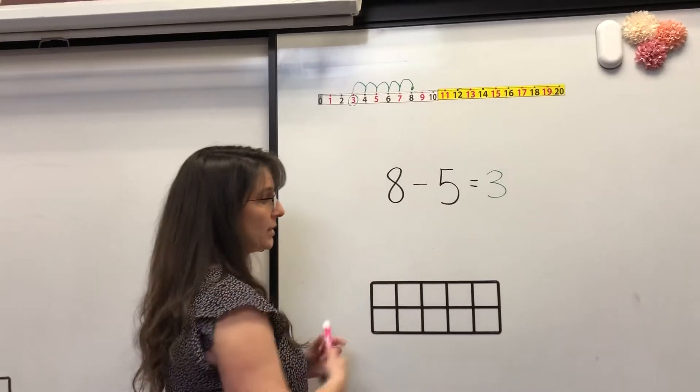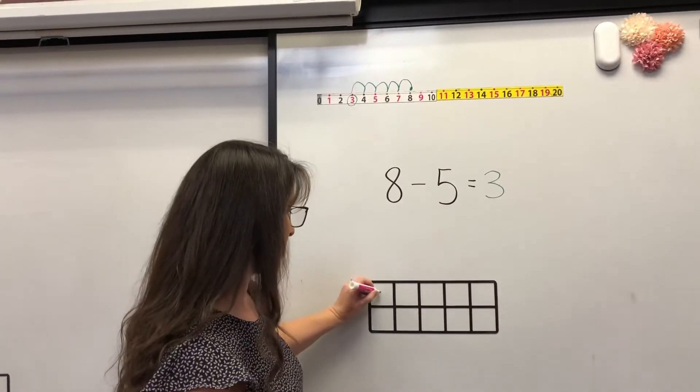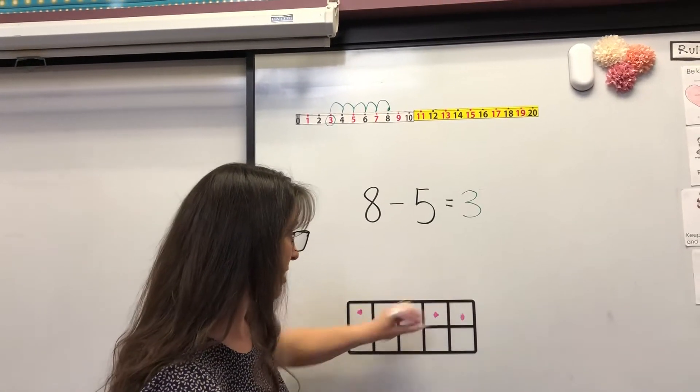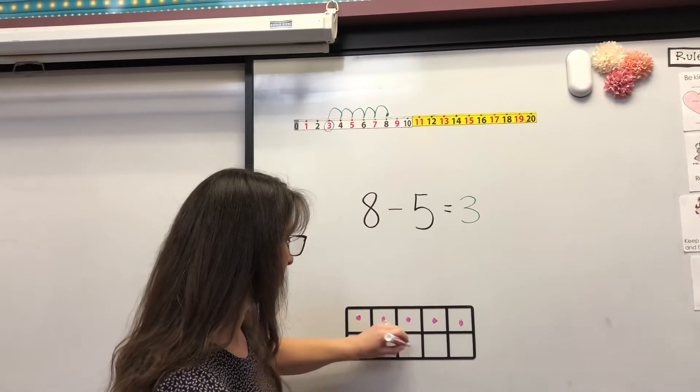So 8 cookies, let's make 8 cookies on a 10 frame. One, two, three, four, five, six, seven, eight.